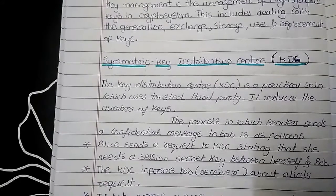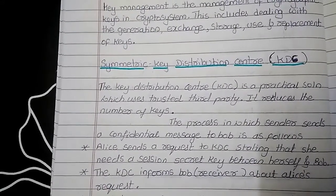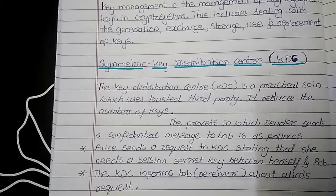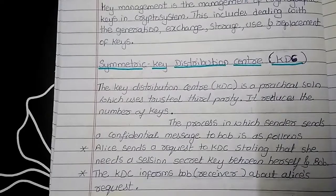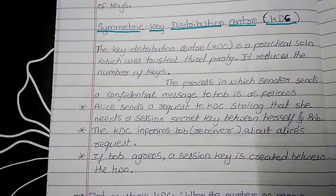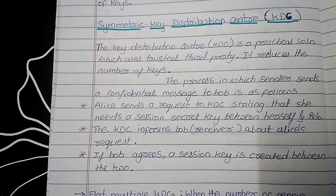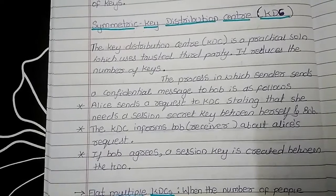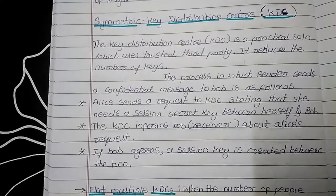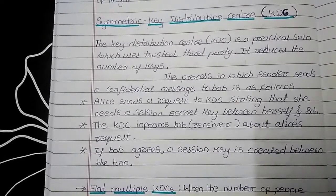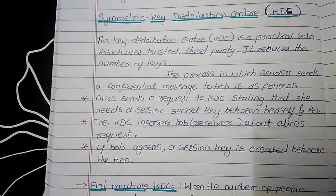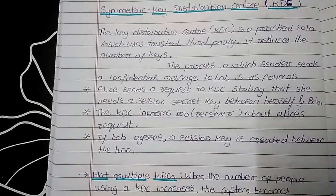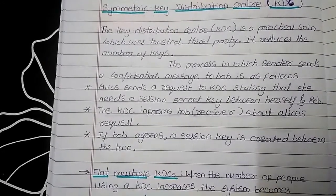Now we will see the concept of symmetric key distribution center, or simply KDC. The key distribution center provides a practical solution where a trusted third party is used to reduce the number of keys between sender and receiver. The sender, Alice, sends a request to the KDC stating that she needs a session secret key between herself and Bob, the receiver. The KDC informs Bob about the sender's request, and if the receiver agrees, a session key is created between the two so they can exchange messages.